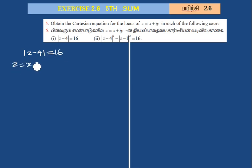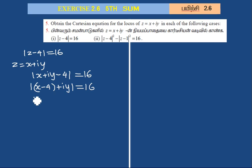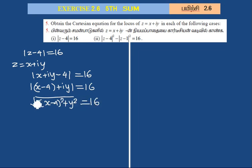Substituting z equal to x plus iy into the locus expression, the modulus of z minus 4 gives us x minus 4. The modulus equals 16, so we have the square root expression equal to 16. I will eliminate the root.